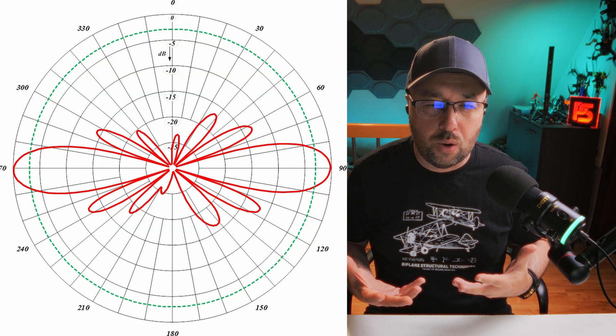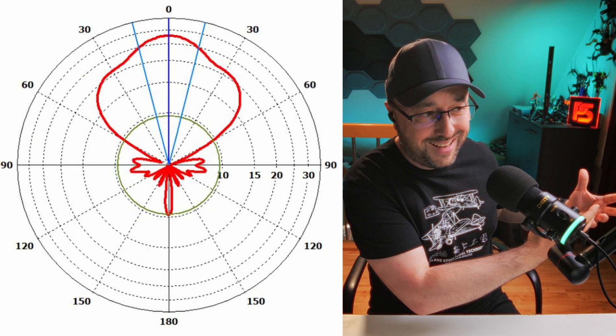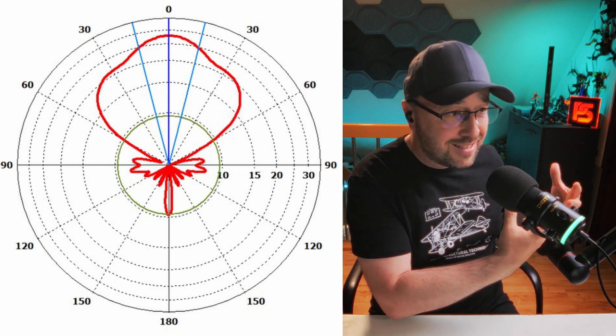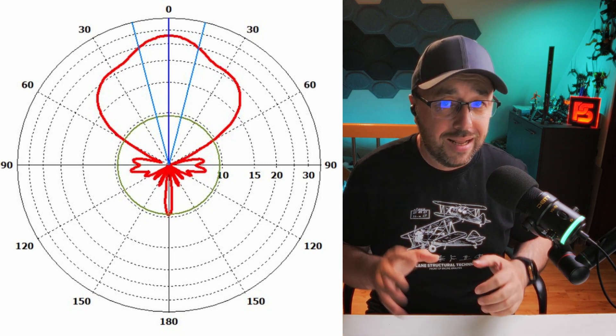There is a gain in this one direction — in this cone, in this shape — where the antenna radiates twice as much as the isotropic. But it's not generating this power from nowhere; it just radiates less from every other direction.